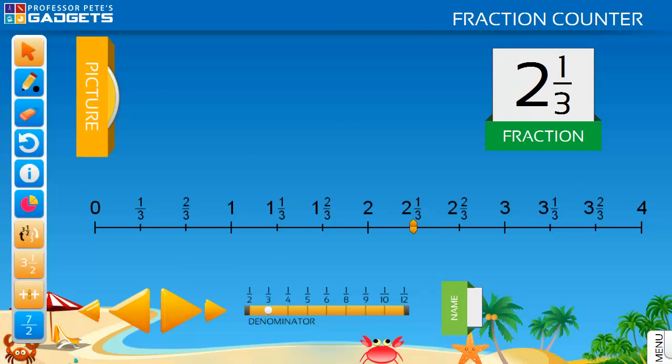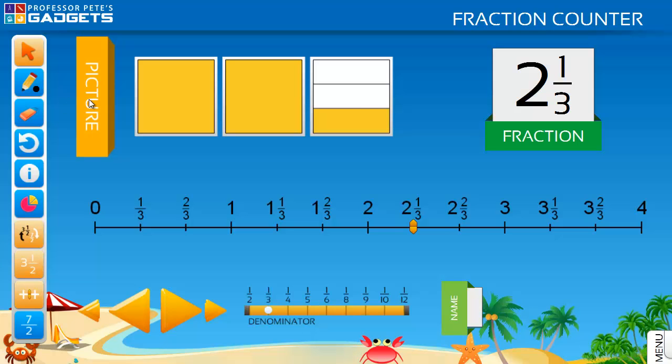Place the marker on the blank number line and have your students draw the shapes to make up the mixed number.